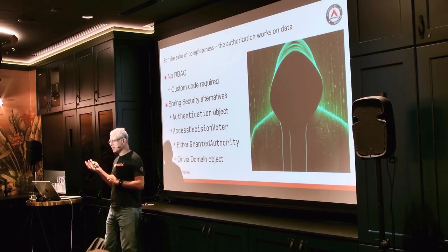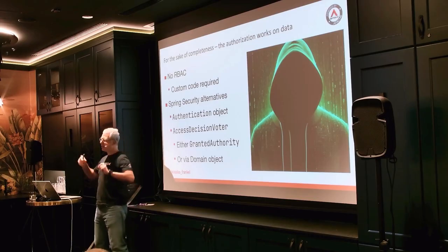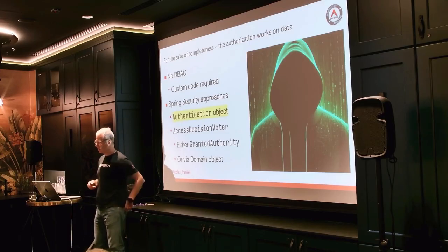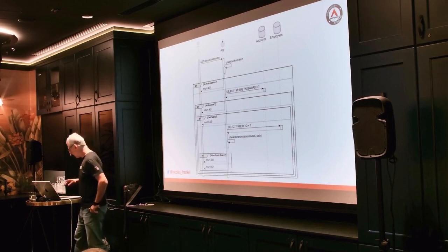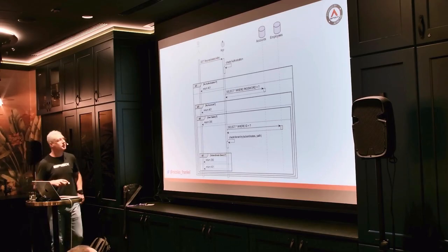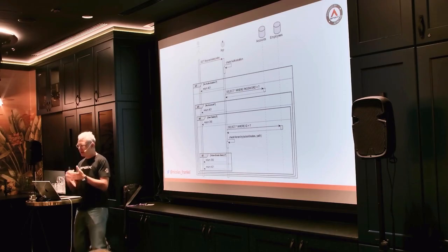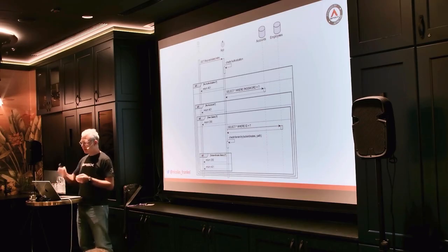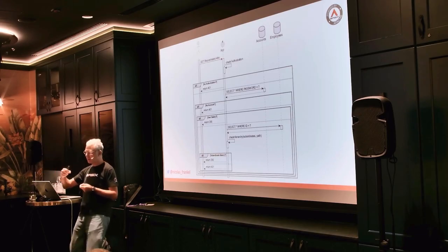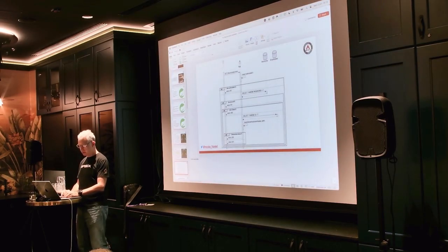If you know about Spring and Spring Security, there are a couple of alternatives: the authentication object itself, and otherwise you could have an access decision voter. The idea is: I got this URL and I want to check this salary info. I check the authorization — no authorization, no access. Then I check the account itself. If I have no account, it doesn't work. Then: is it my own salary? Yes. Or I need to check the hierarchy.